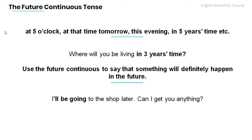Now we can also use the future continuous tense with phrases such as: at 5 o'clock tomorrow, this evening, in 5 years time, etc. As in the example below: Where will you be living in 3 years time?